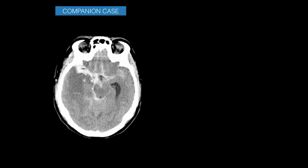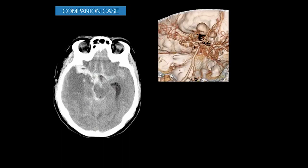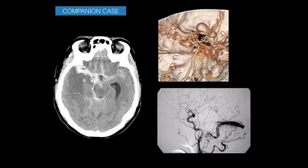Sometimes the pattern of subarachnoid bleed and parenchymal hematoma appears atypical — as in a case with edema in the right temporal lobe, midline shift, and possible early hydrocephalus. CT angiogram showed no aneurysm, but prominent venous channels were seen along the floor of the anterior cranial fossa. DSA demonstrated a dural AV fistula draining into the transverse sinus. A dural AVF can present with venous hypertension and parenchymal bleed extending into the subarachnoid space, mimicking aneurysmal SAH.